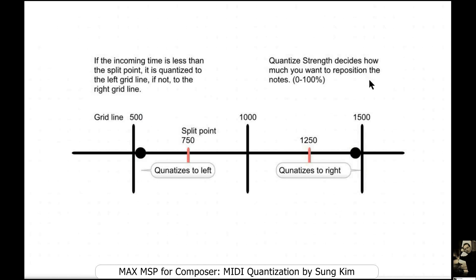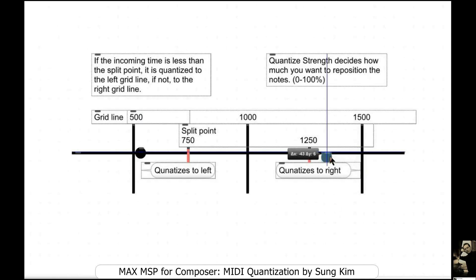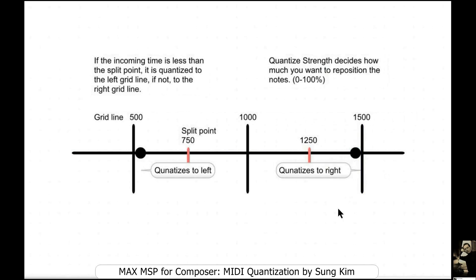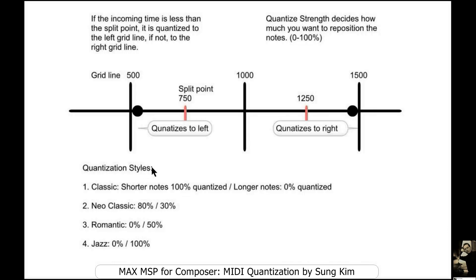The quantized strength decides how much you want to move the nodes. If you move 100%, it will be right on the grid line; 90% a little bit before the grid line. There is also a quantization style that works like a human playback. Here, I'm only using the detonate object to create a quantization effect, using the duration value to split the incoming notes and apply different quantization strengths according to the length of the duration. For neo-classic style of music, I'm applying 80% of the quantization strength to the longer notes and 30% to the shorter notes.